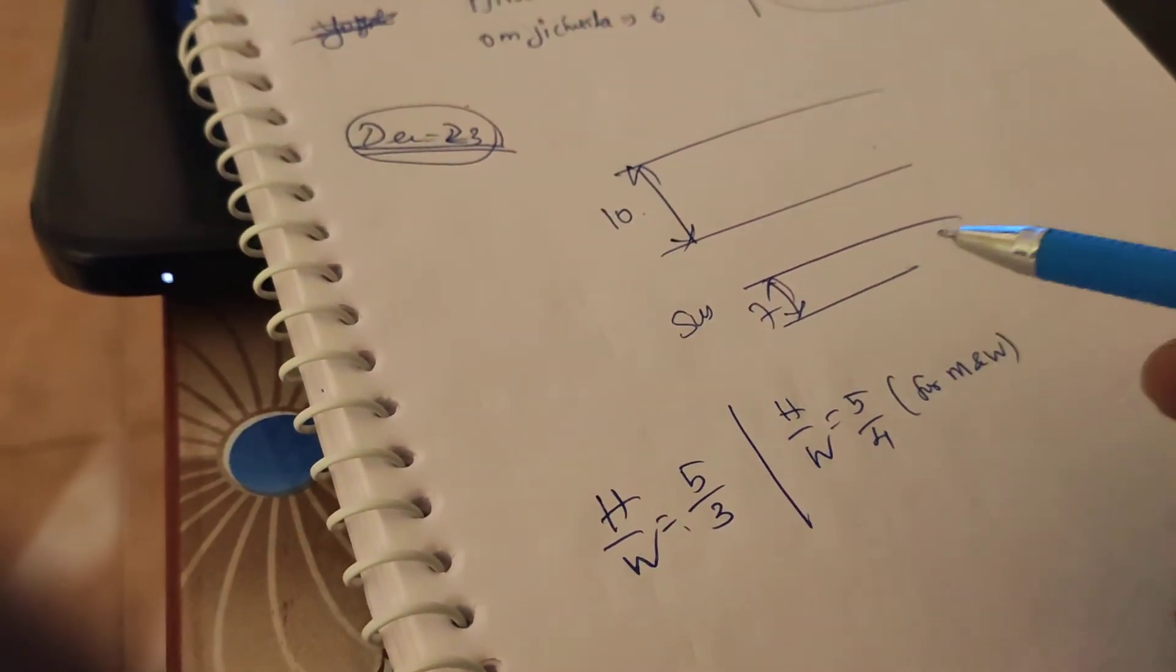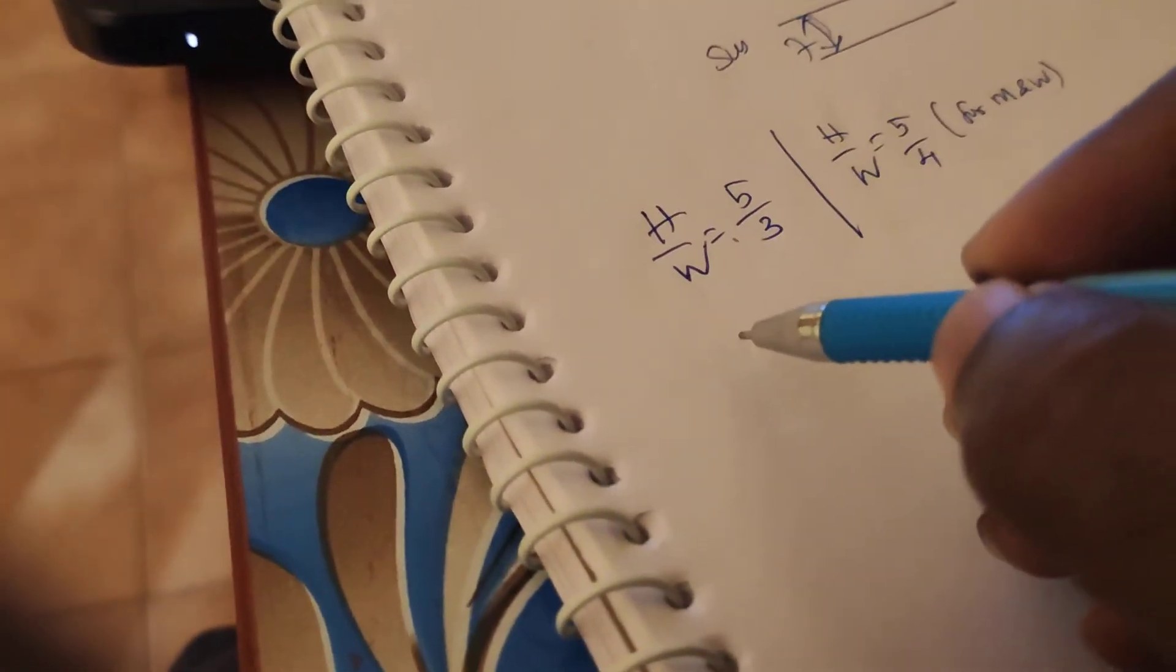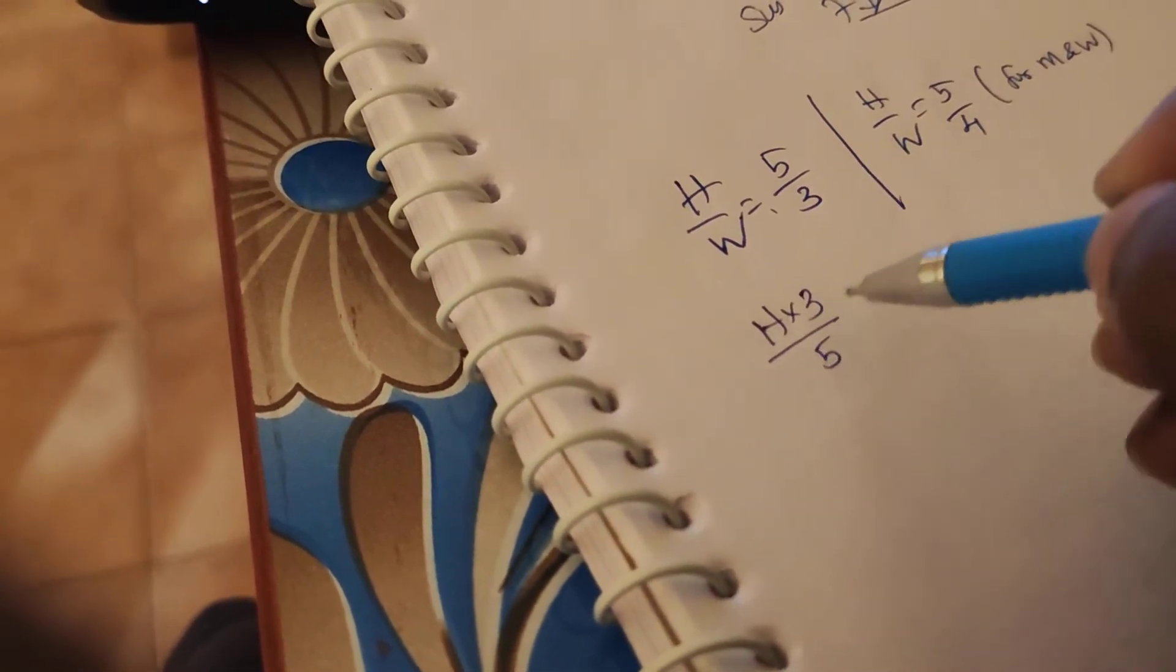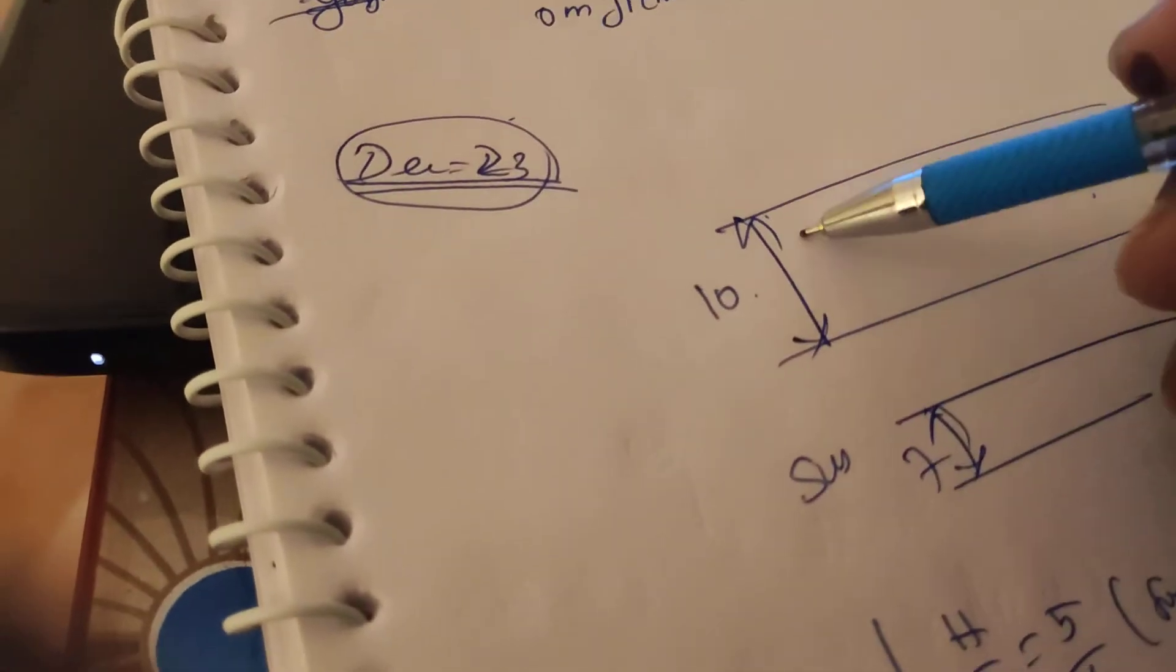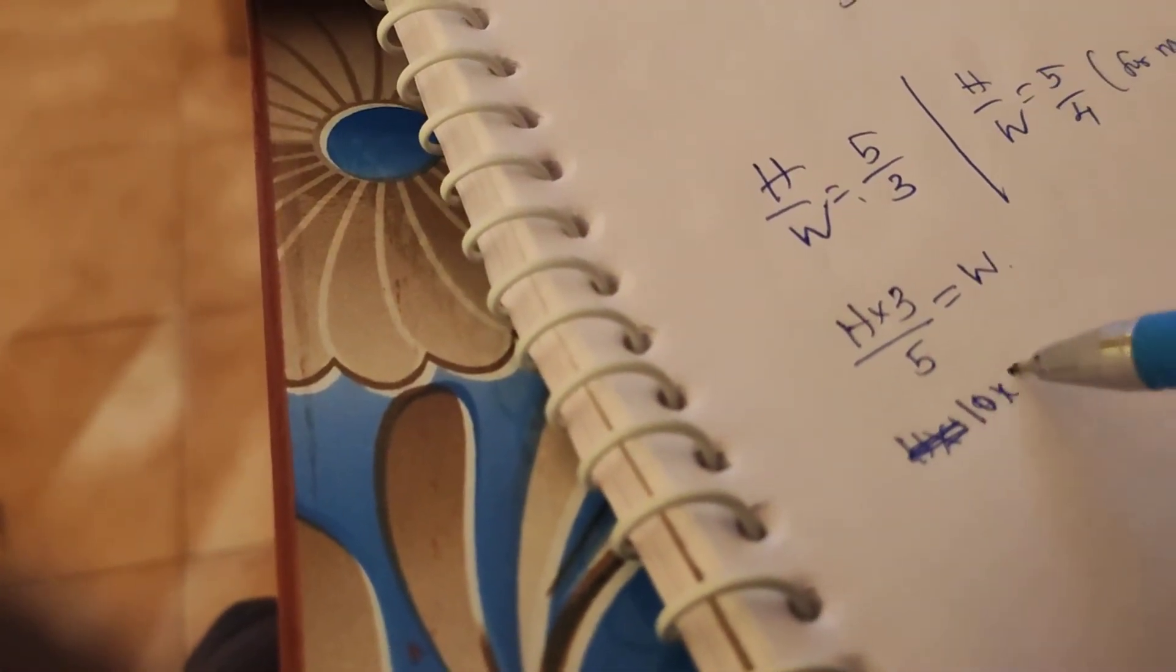Suppose if you are going to write the letters in 10 mm height, so substituting the formula, so what I have to do? I want to know the width of the letters. Height into 3 divided by 5 equal to W. So suppose if I am taking 10 mm as a height, what I will do? 10 into 3 by 5 is equal to width.